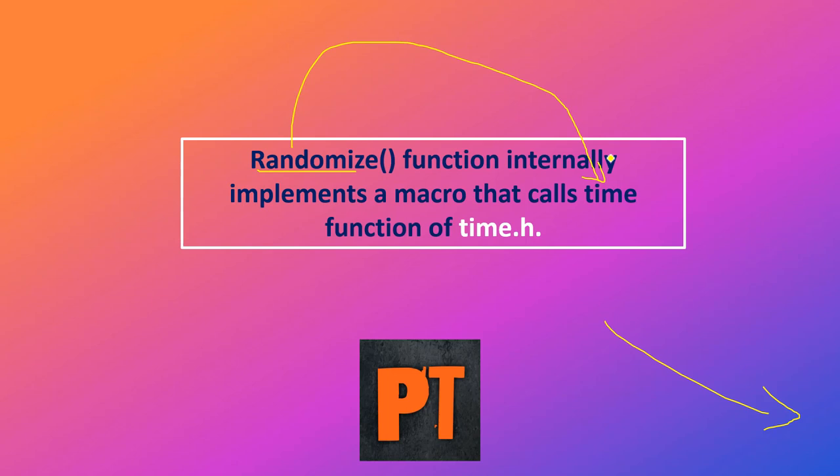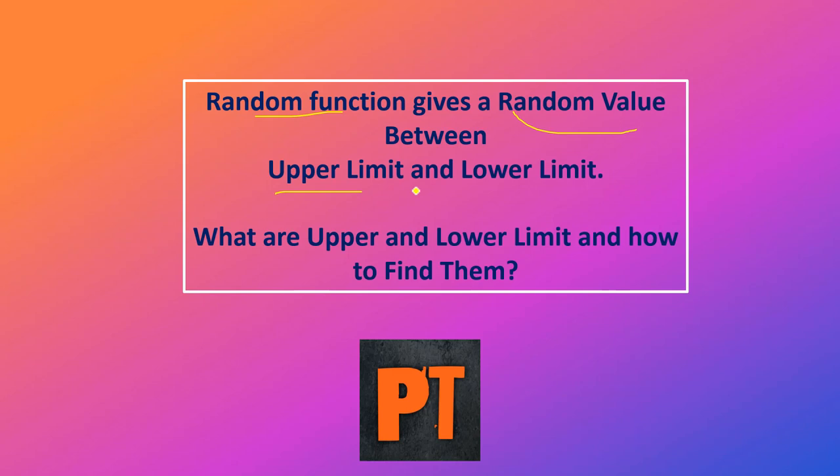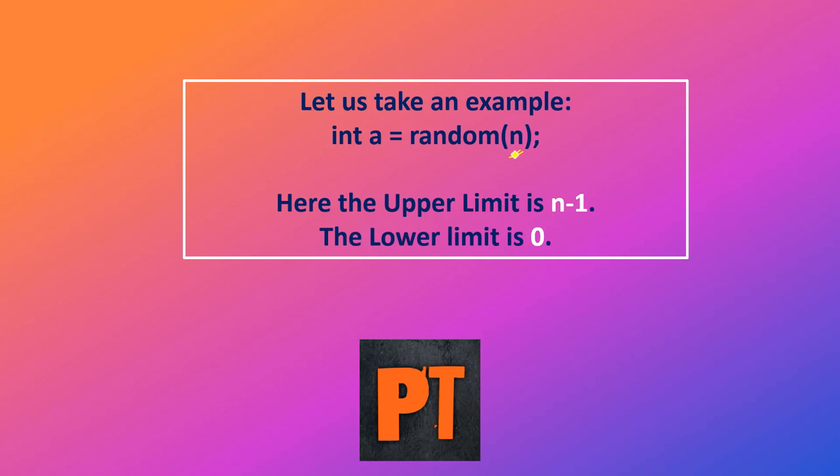The random function gives a random value between an upper limit and a lower limit. Now what is this upper limit and lower limit, and how to find them? This is the most important thing. Let's take an example: int a = random(n) — this n is an integer which is sent as an argument. What is the formula?